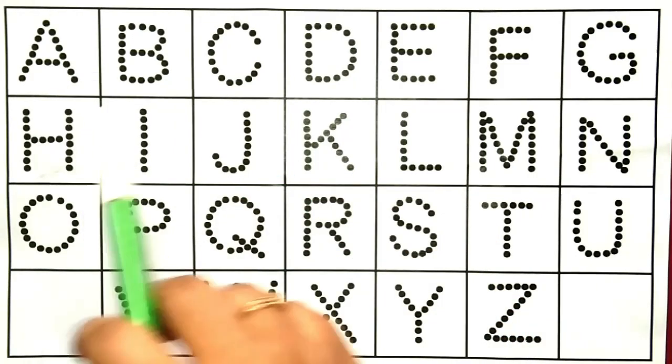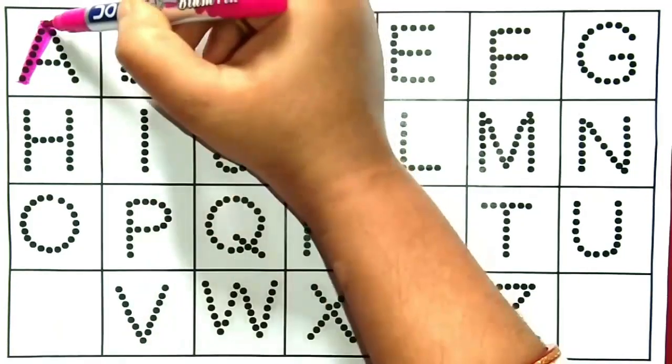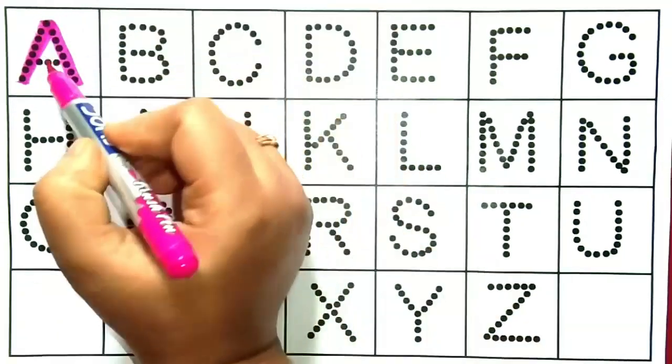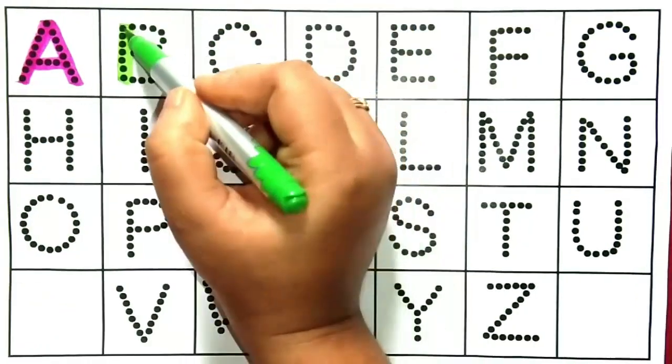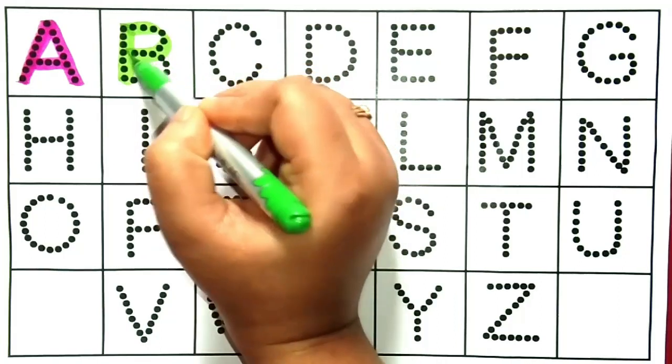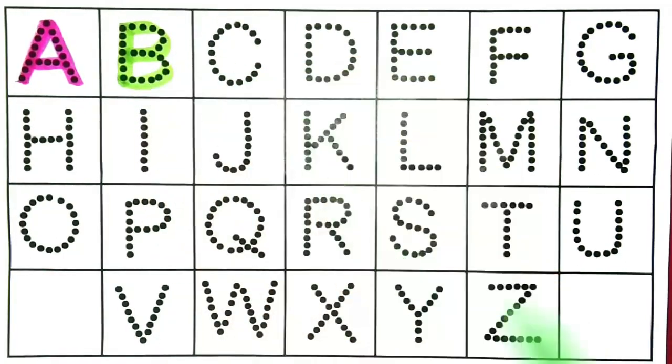Let's learn to A, B, C, D alphabets. A, A for astronaut, A for astronaut, A for astronaut. A, B, B for balloon, B for balloon. A, B, C, C for crocodile, C for crocodile.